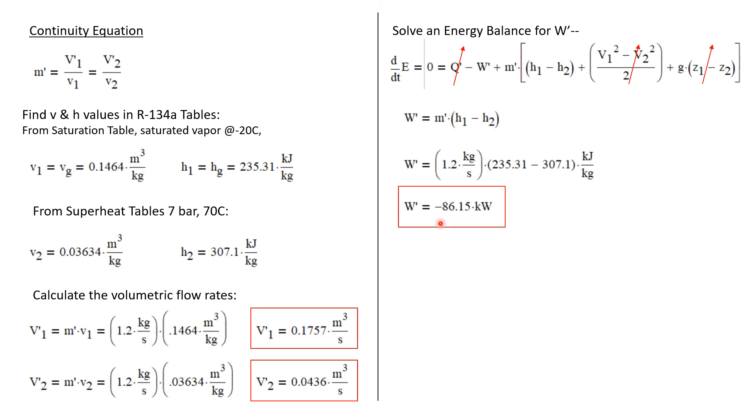The negative indicates that it's not work done by the system, but it's work done on the system, which of course it has to be for a compressor. We have to put power into the compressor in order for the compression process to take place.